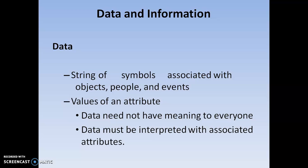Coming to the differences between data and information: data involves storing of symbols associated with objects, people, and events. These kinds of data can be represented in the form of attributes, and each attribute can have some values. Data is raw and it cannot have any meaning on its own. Data must be associated with some kind of attributes, and each attribute can have its own values. So data can be represented in the form of attributes, and attributes can be represented in the form of values.